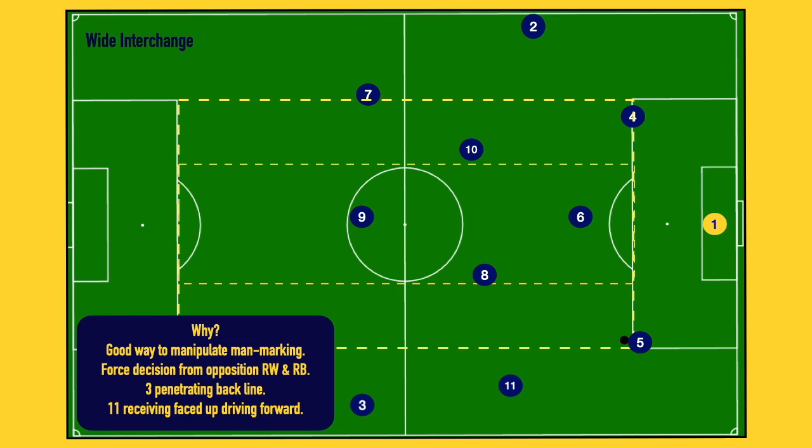We're looking to force the decision from the right wing and the right back. Can we play the ball over the back line into the three because the opposition's right back has foolishly followed our winger back into that pocket? Or do we play the eleven because the right winger followed the three up the field — so now we can just play the eleven and she can get on the ball facing forward.